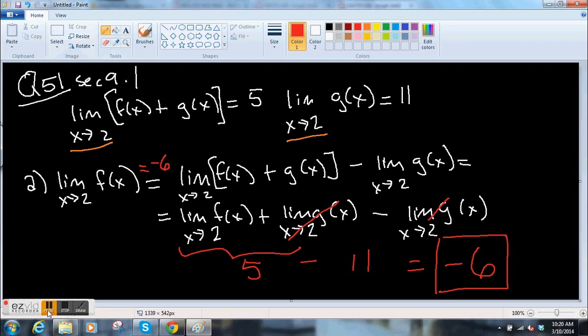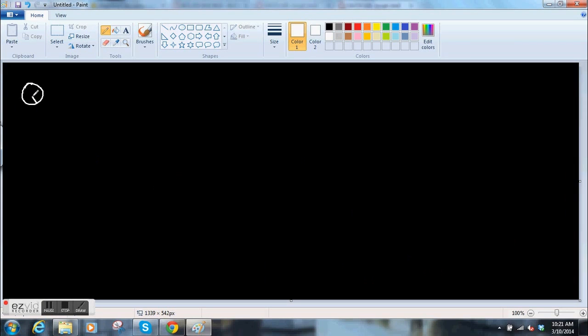Okay, let's look at part B. Question number 51, part B says find the limit as x goes to 2 of f of x squared minus g of x squared.